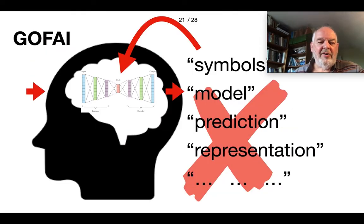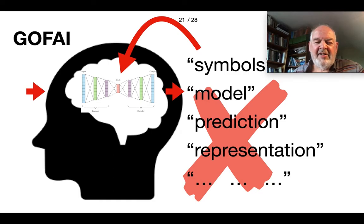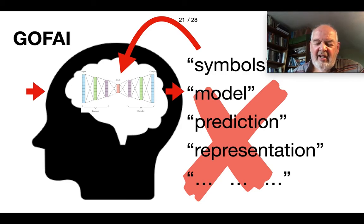Unfortunately, GOFAI — good old-fashioned AI — suffers from the mereological confusion and has assumed that because we as humans can handle symbols, models, predictions, and representations, somehow our brain or parts of our brain must contain these. Even neural network researchers, many of them make the same mistake. They assume that when there are neural networks in the brain, somehow within the neural network these symbols, models, etc. are encapsulated.